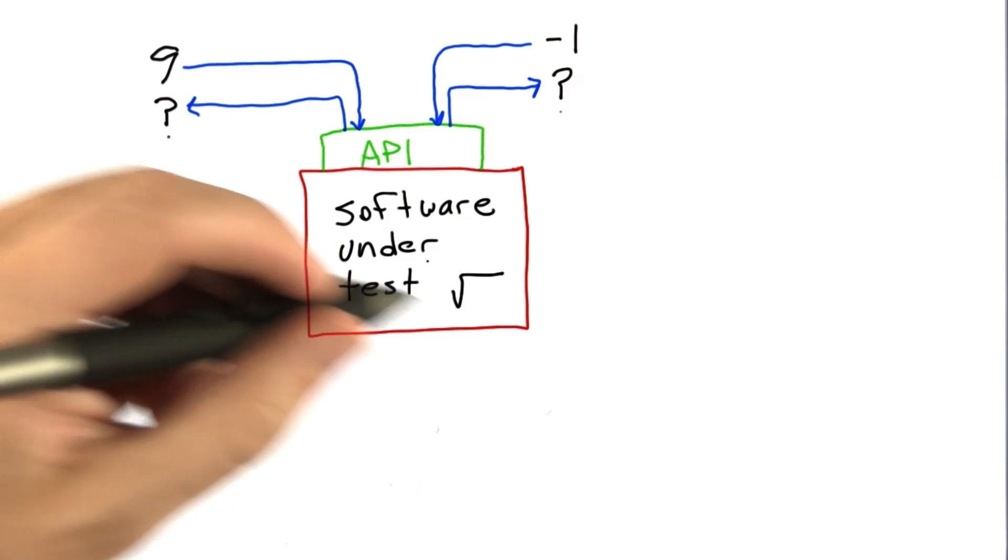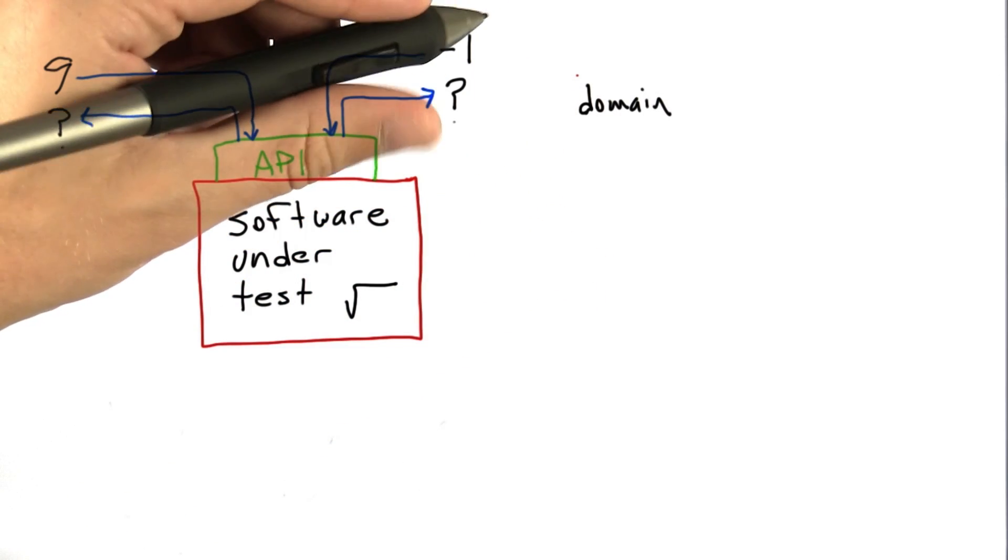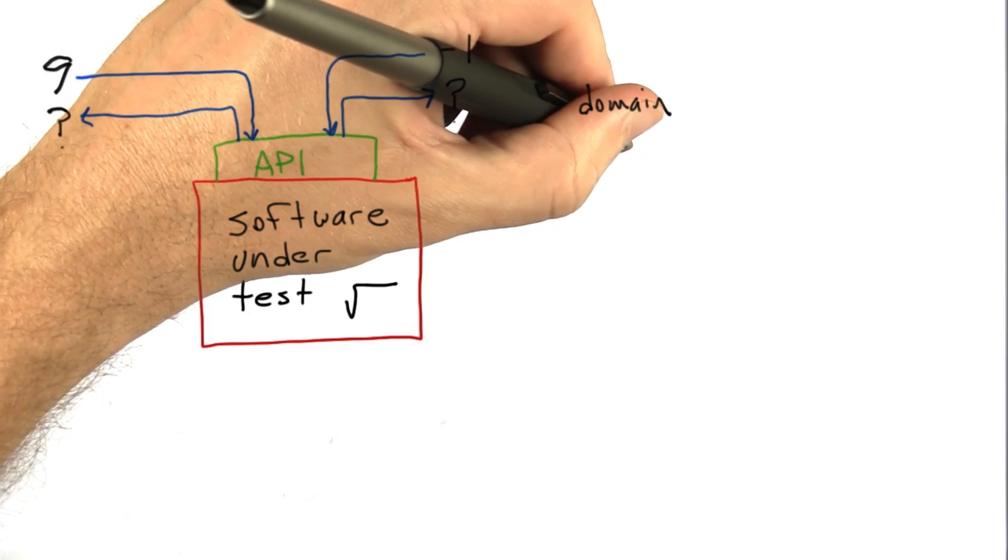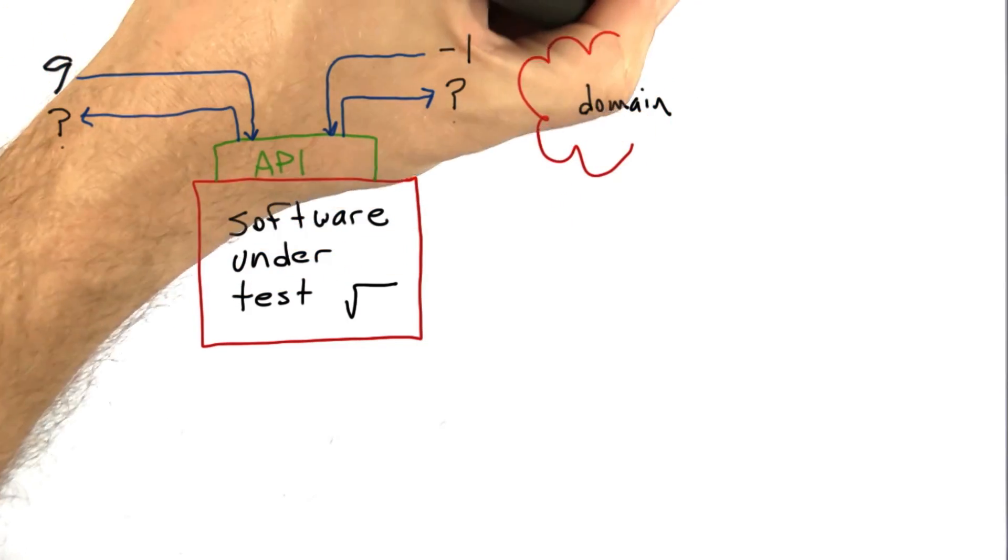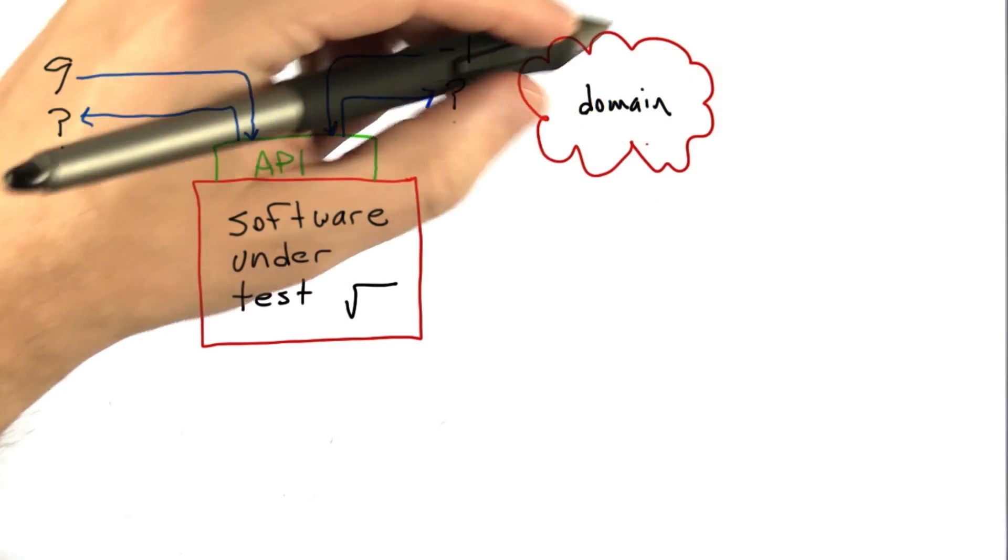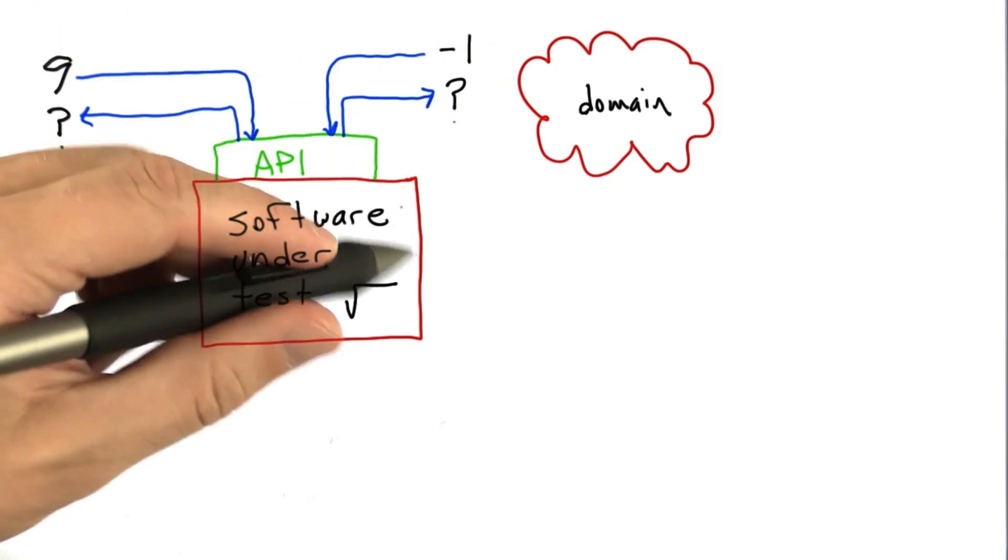If we think of software as a mathematical object, we'll find it has a domain of values. The domain is the set of possible values that constitutes the inputs the software is designed to handle.